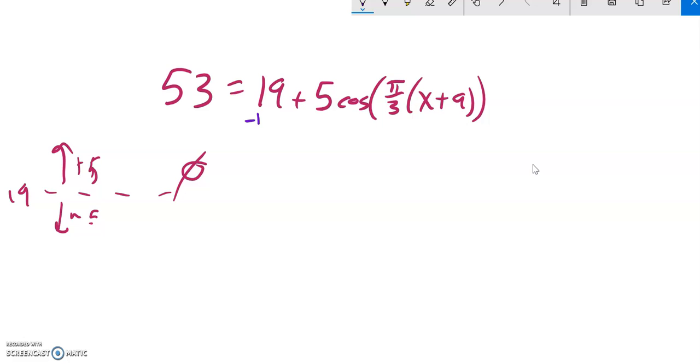So first thing I would do is subtract 19 from both sides. That would be, I think, 34. 34 equals 5 cosine, and then whatever that stuff is. I divide by 5. So 34 fifths equals cosine of whatever.